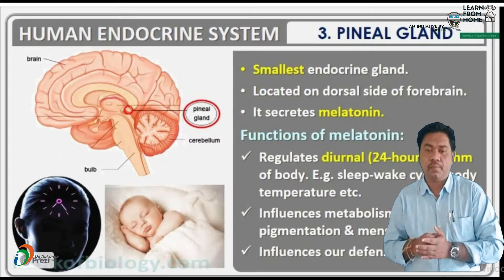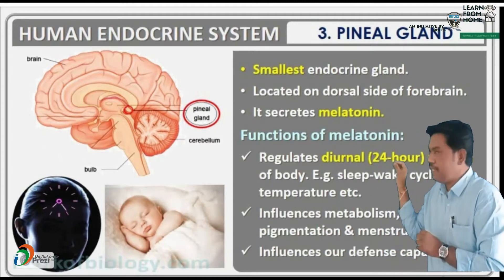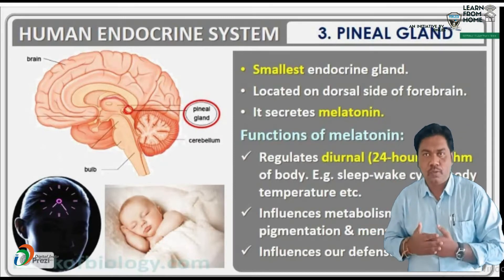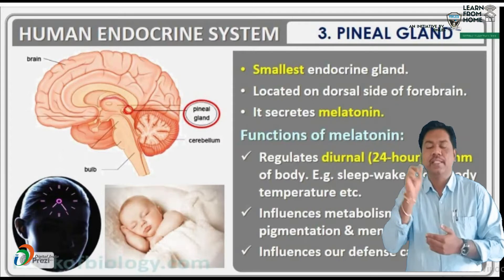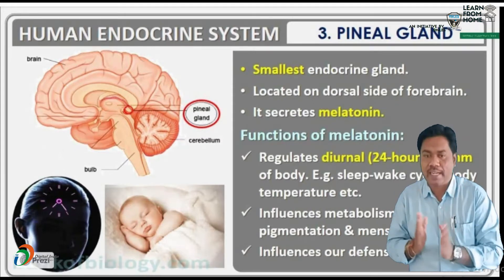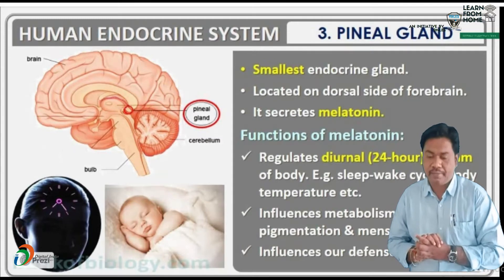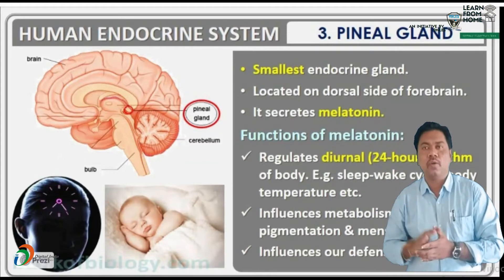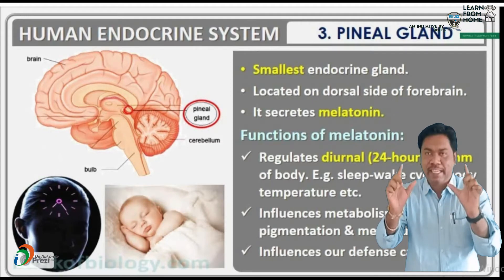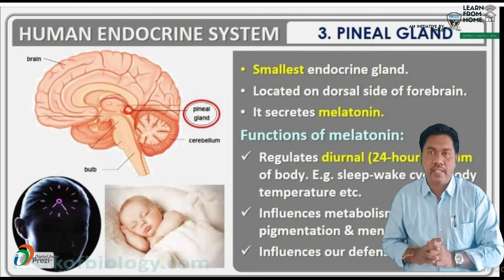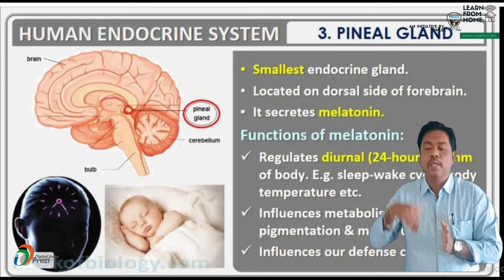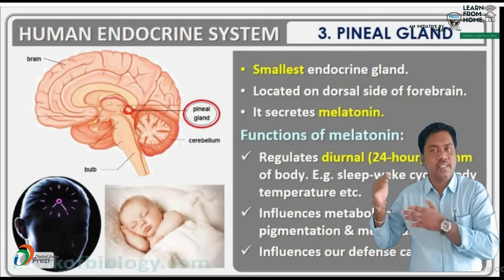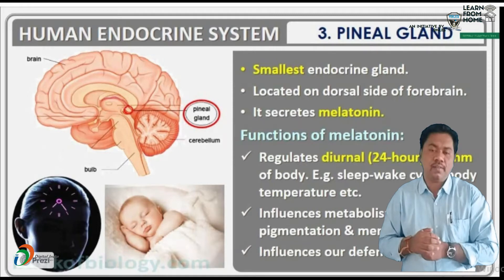This pineal gland is located in the dorsal side of the brain. Actually, this pineal gland is located in the epithalamus. The epithalamus is a part of the brain, and in that epithalamus area there is a small structure — a small gland known as the pineal gland. It is the smallest endocrine gland among all endocrine glands.